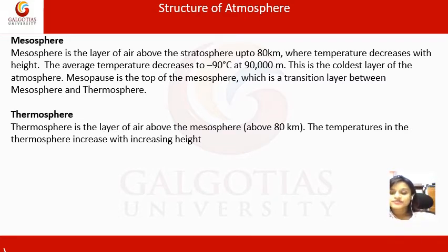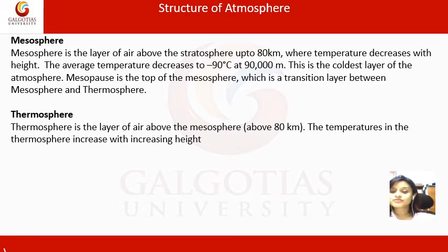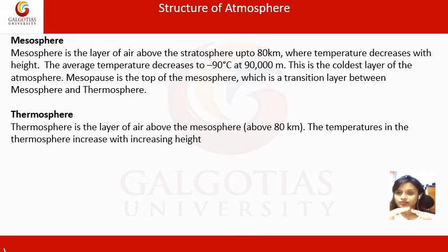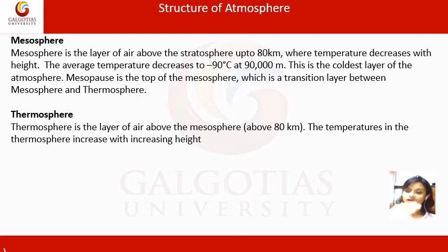The mesosphere is the coldest layer of the atmosphere. Just as the troposphere has the tropopause, the mesosphere has the mesopause — a transition layer between mesosphere and thermosphere. The last segment is the thermosphere, the topmost layer of the atmosphere. In the thermosphere the temperature increases with increasing height, which is the opposite of the mesosphere.